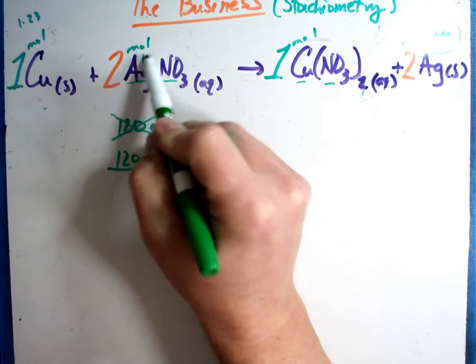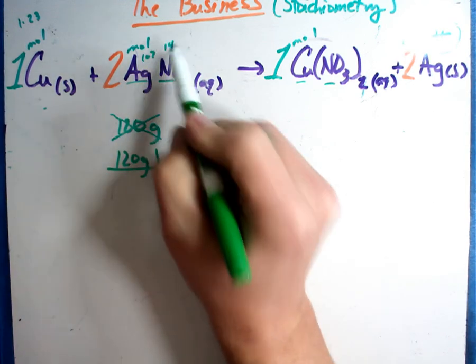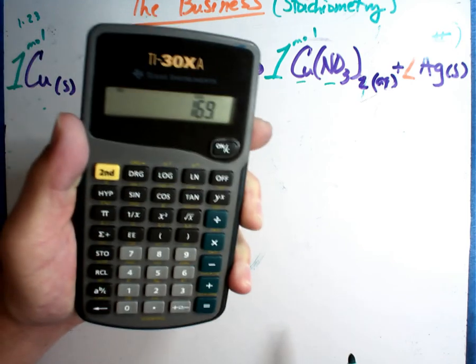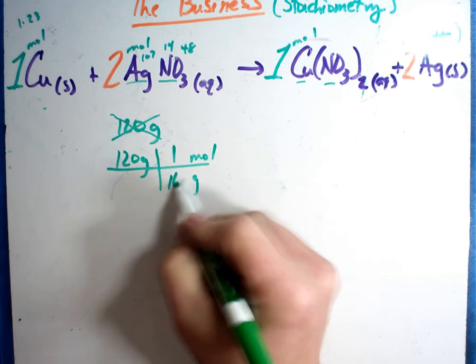Ag is 107, nitrogen is 14, oxygen is 16 times 3 is 48, so I'm going to add those together. If I did that too fast, pause the video and see what you get. When I add them together, I get 169. So that's 169 grams.